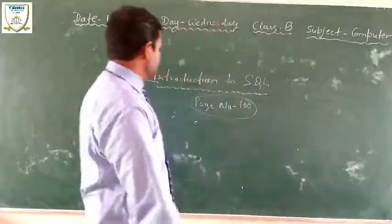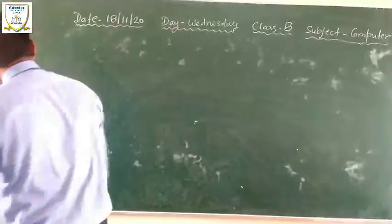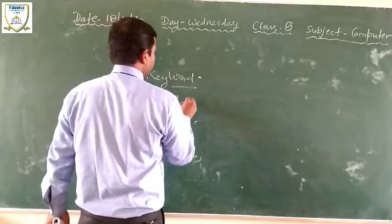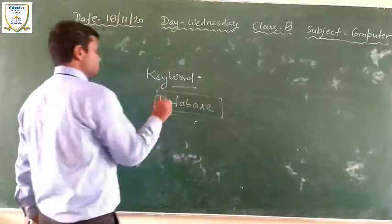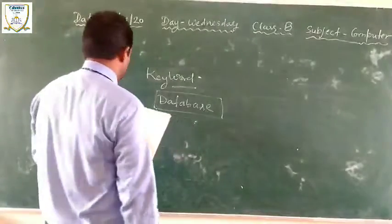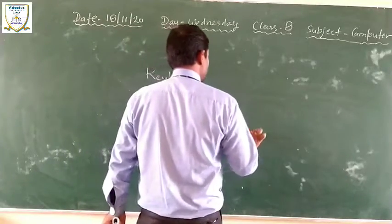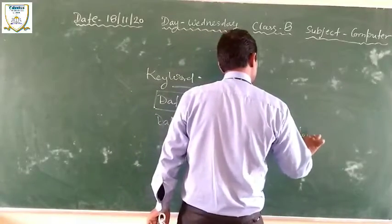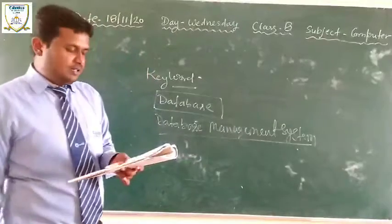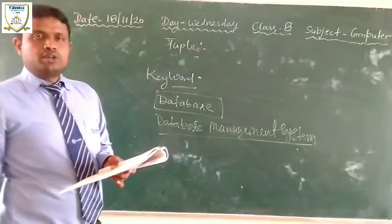Now we have just revised the keywords. First keyword: Database — a collection of organized information. A collection of organized information is called a database. Second keyword: Database Management System — a system that allows the creation, updation, and manipulation of data.